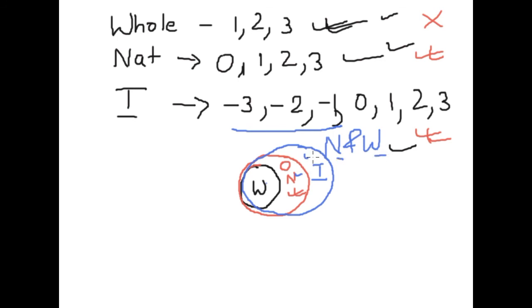These parts are negative integers. So, in this way we will draw Venn diagram of whole number, natural number and integers.